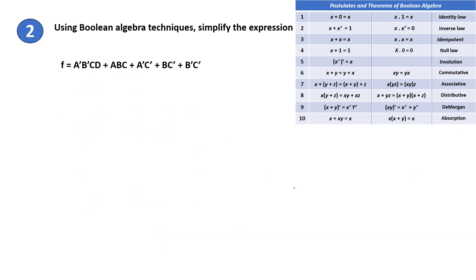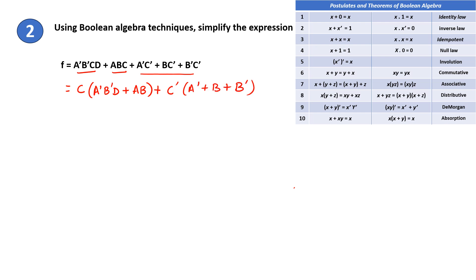Problem 2. In this problem, first take the first two terms. C is common so take it out. You will get A'B'D plus AB. Next in the following three terms, C' is common so take it out, and you will get A' plus B plus B'.